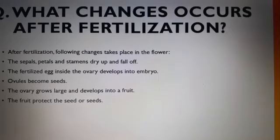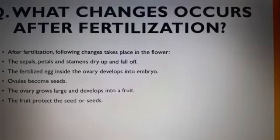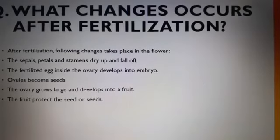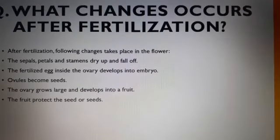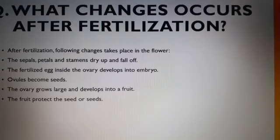The fertilized egg inside the ovary develops into the embryo. Ovules become seeds. The ovary grows large and develops into the fruit. The fruit protects the seeds present inside the plant.